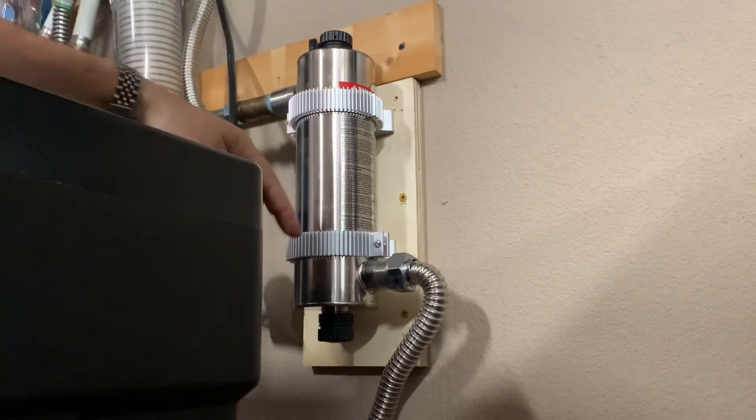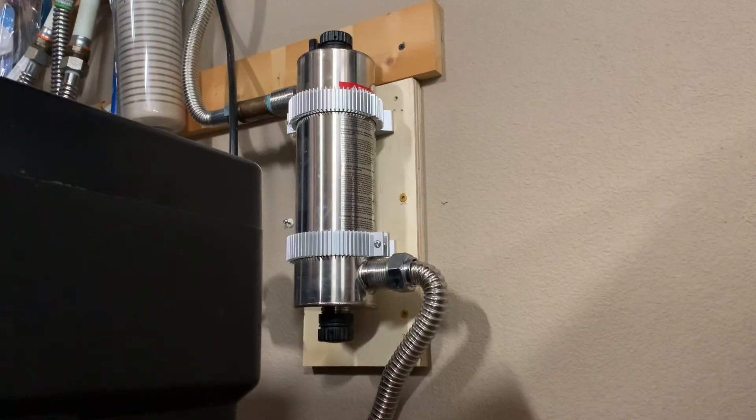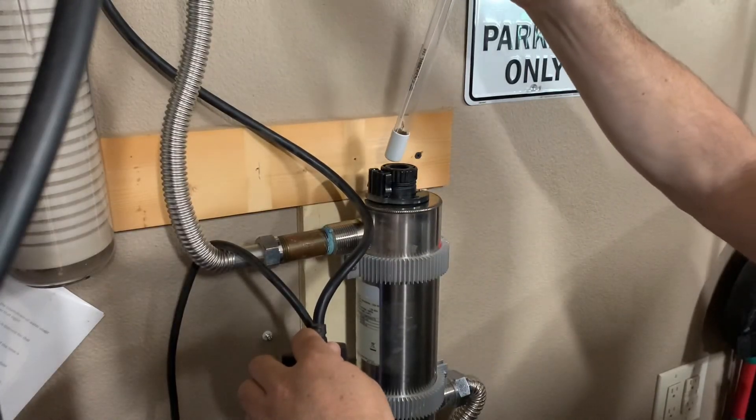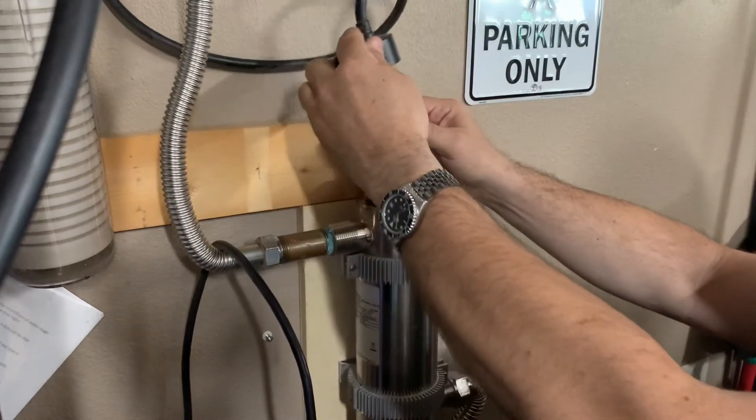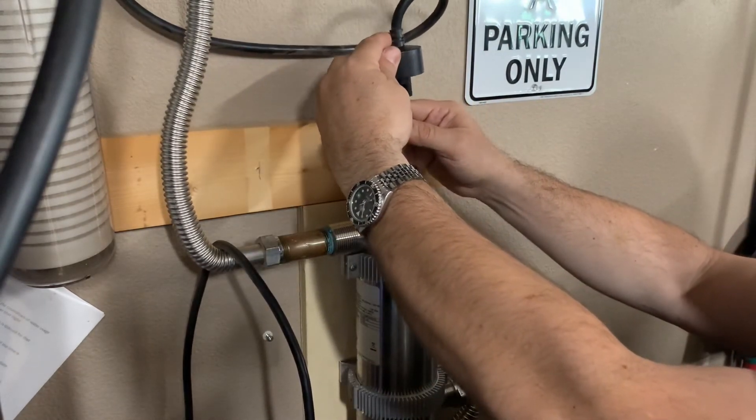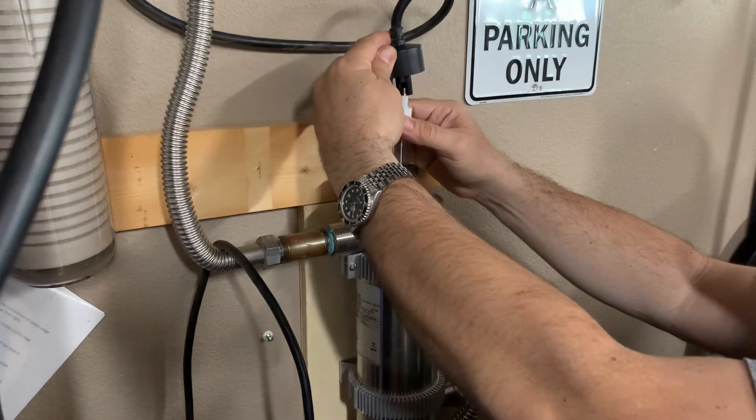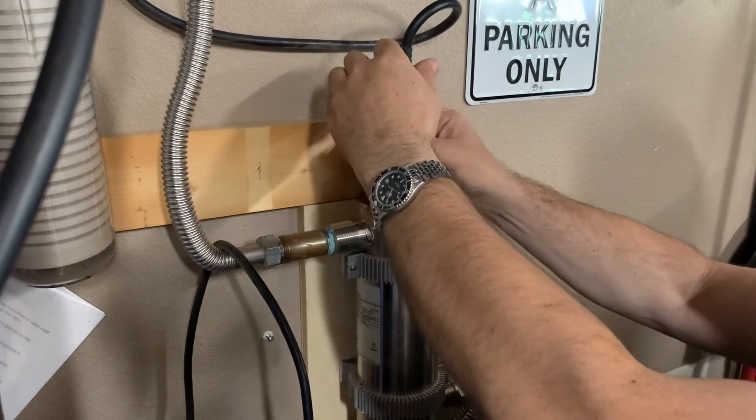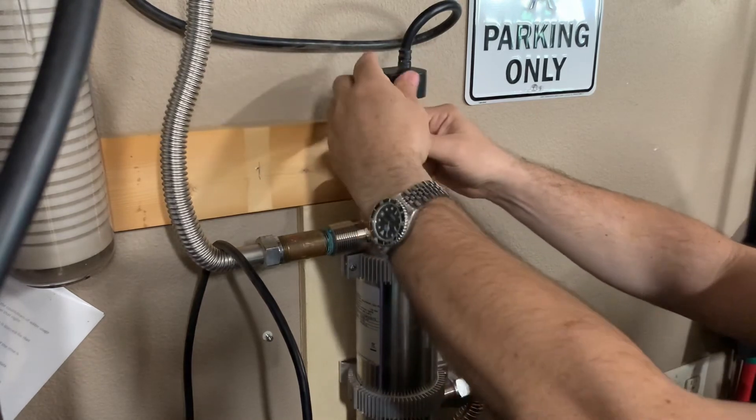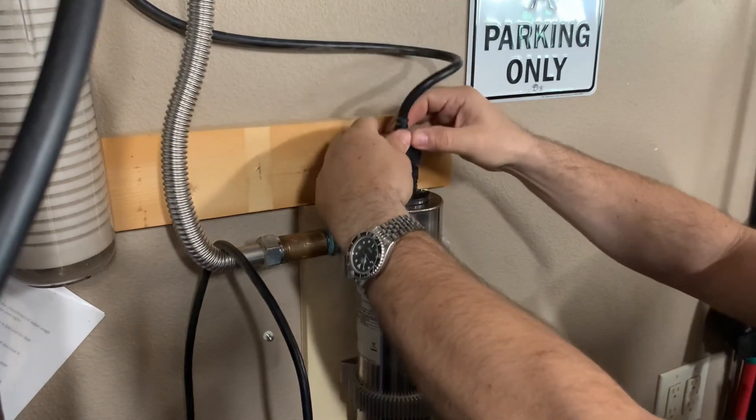Now I've got my quartz liner reinstalled. Replacing the bulb is the same as you did when you removed it. You're just going to set it down in and then replace your power plug, get the bulb connected to the plug.